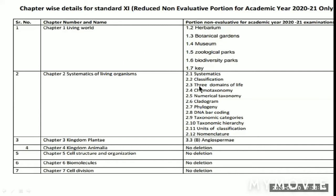In chapter 2: 2.7 Phylogeny, 2.8 DNA Barcoding, 2.9 Taxonomic Categories, 2.10 Taxonomic Hierarchy, 2.11 Units of Classification, and 2.12 Nomenclatures. All these points are excluded from the syllabus.